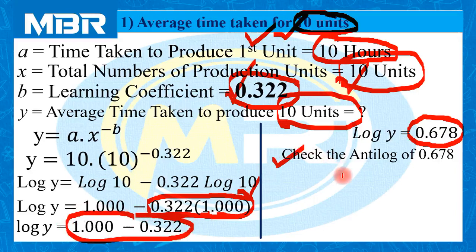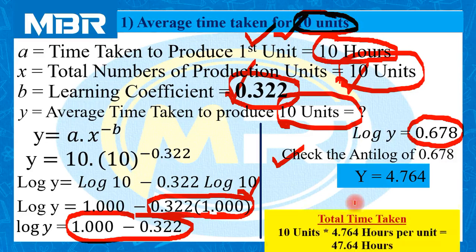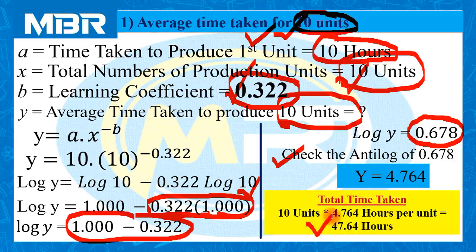Check the value in the antilog table to derive the result. In the question, the value of antilog for 0.678 is ready-made given, and the result is y equals 4.764. This 4.764 is the average time taken to produce one unit when we are producing 10 units. So if the examiner asks for total time to produce 10 units, simply multiply: 10 units multiplied by 4.764 gives the total time for 10 units.